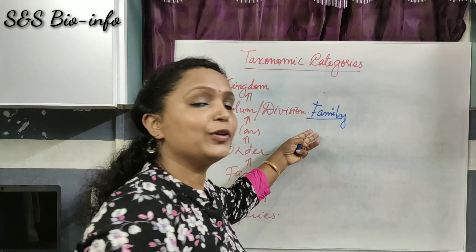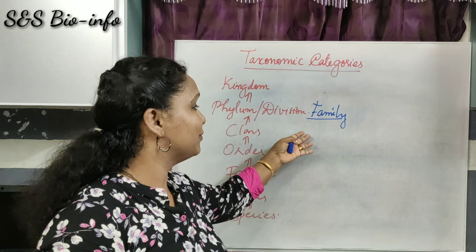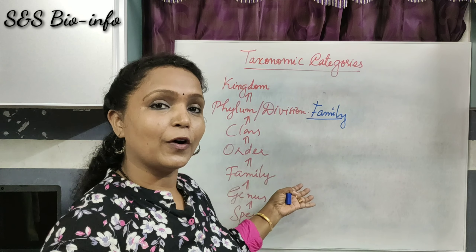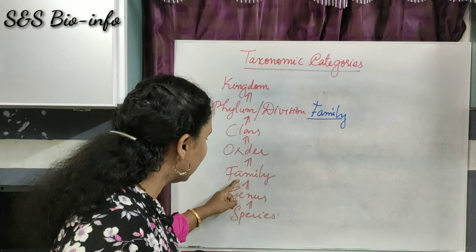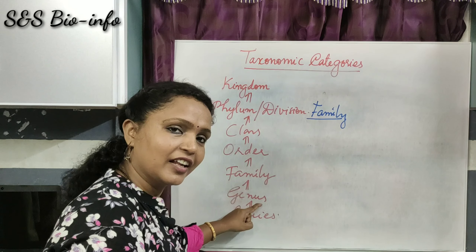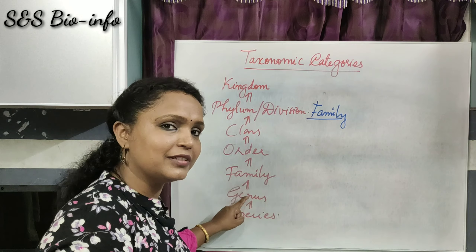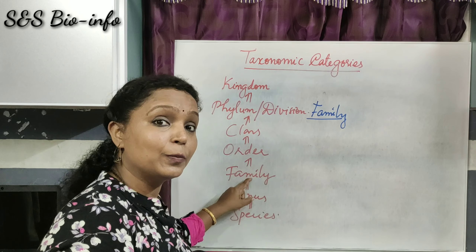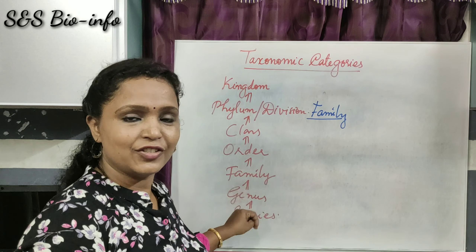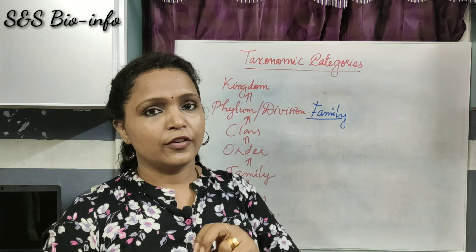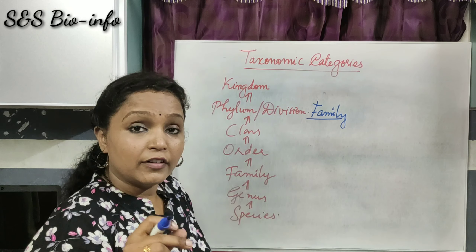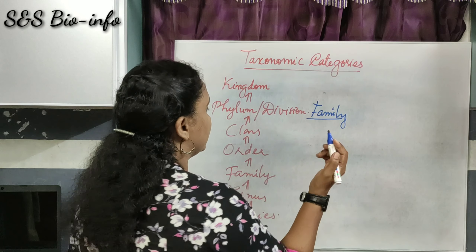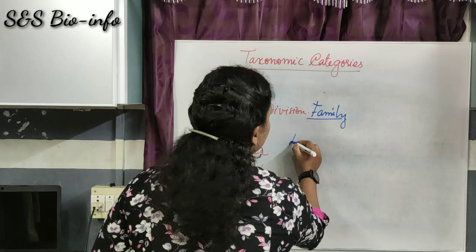The next taxonomy category is Family. Family is a group of closely related genera — 'genus' is the singular form and 'genera' is the plural form. For example, the flowering plants come under some particular genera like Datura, Petunia, and Solanum in a particular family, Solanaceae.